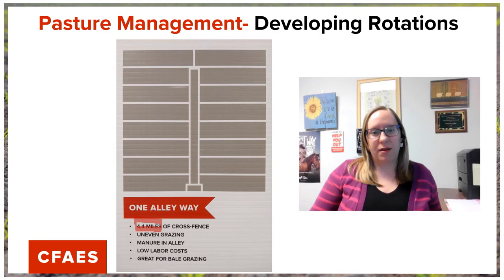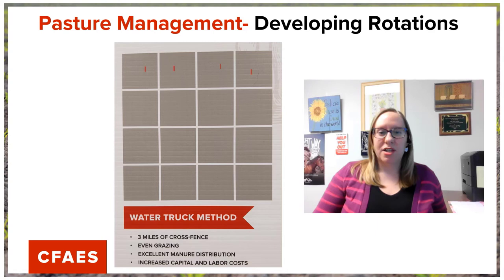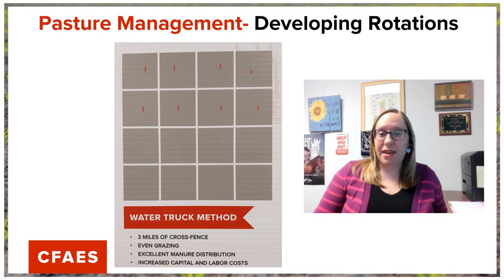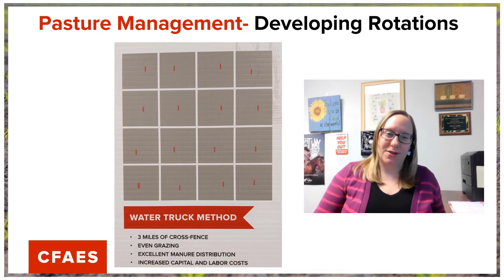The next example is the water truck method. In this example we have even paddocks of the same size divided by permanent fence. We actually have less fencing in this system than in the two prior. We have even distribution of grazing and even distribution of manure, but we do have increased capital cost in acquiring water that can be moved and the time it takes to move water. There is no permanent water in any of these paddocks, so we will have to move water and make it available to the animals. The disadvantage is the increased labor and capital investment required to make it work.